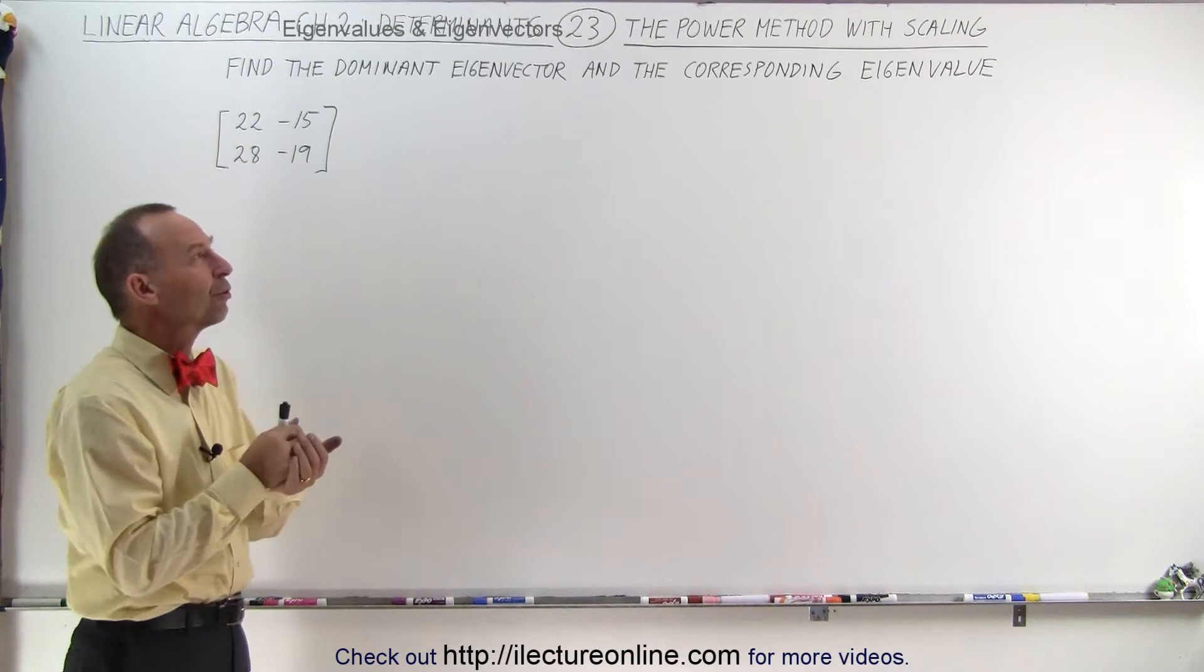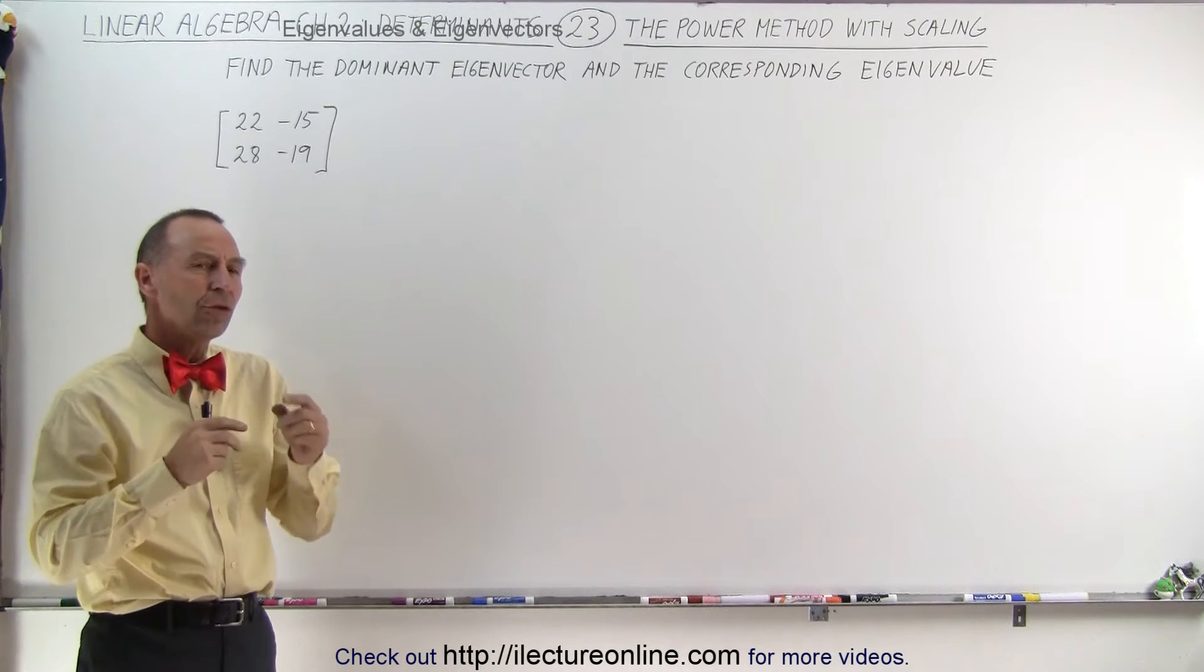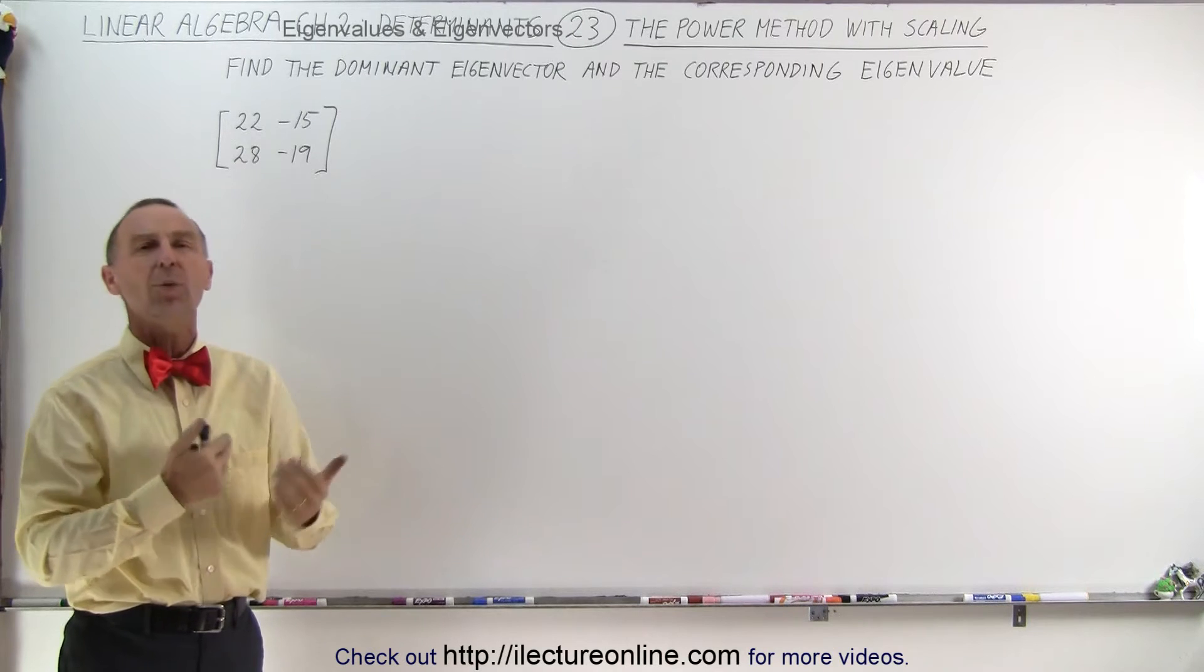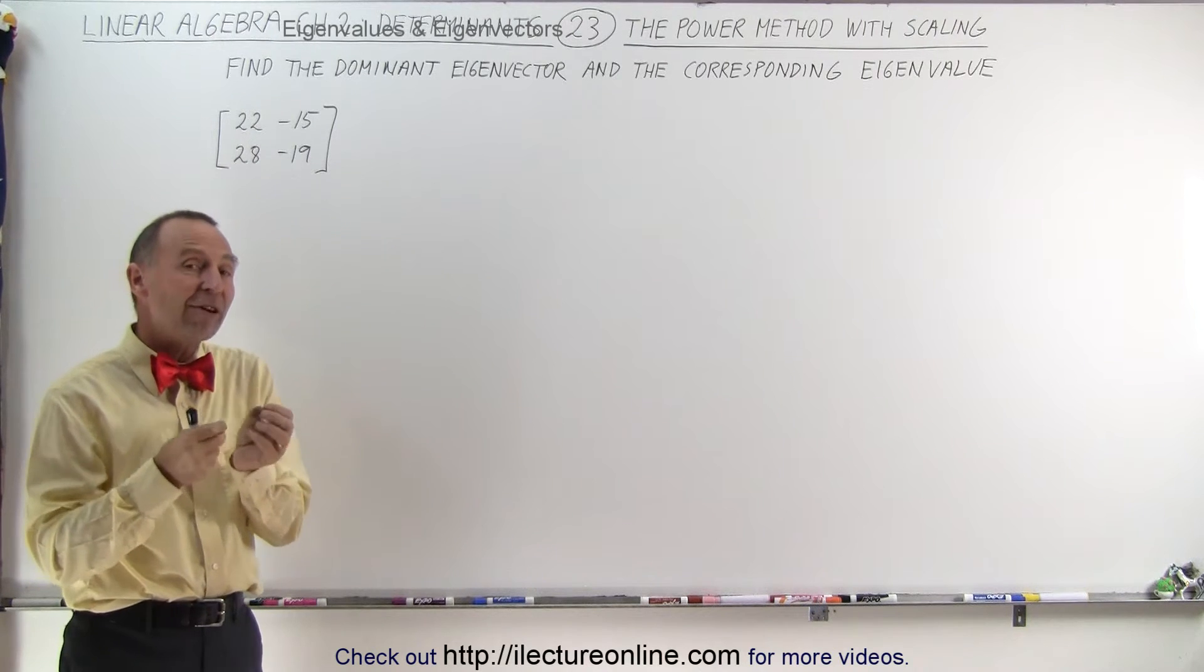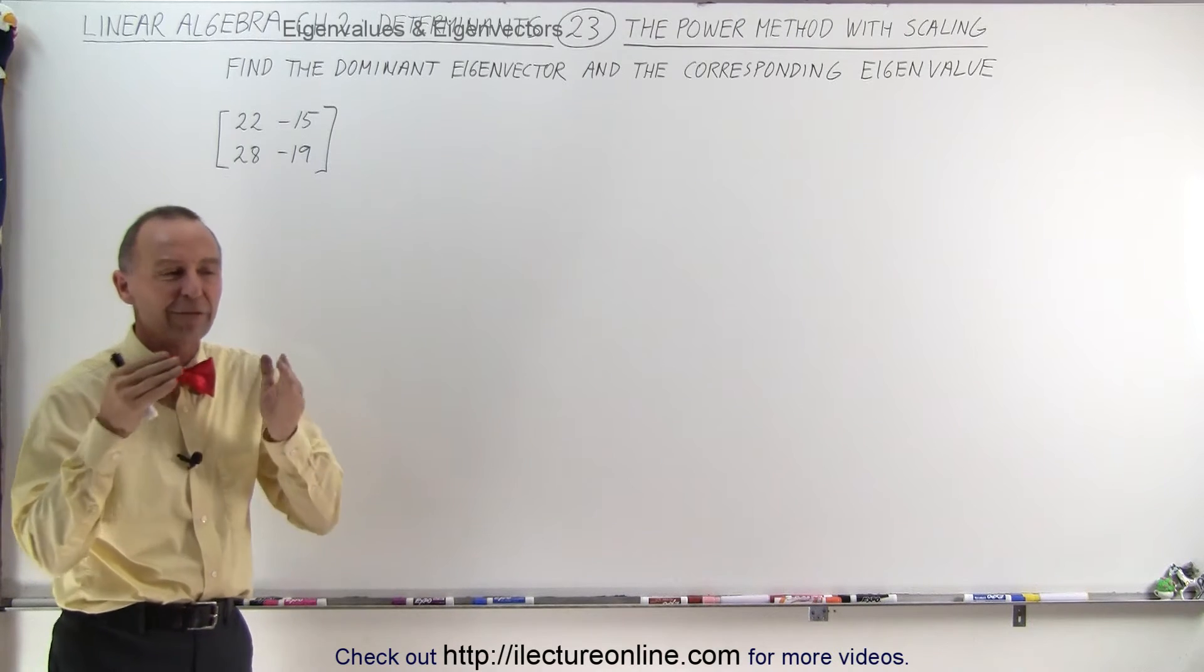But what we're going to do here is we're going to also use what we call scaling. Because if we don't, the numbers get to be so large and they don't seem to correspond to one another very well that it may be very difficult to guess as to what the eigenvector will become, what it converges to.